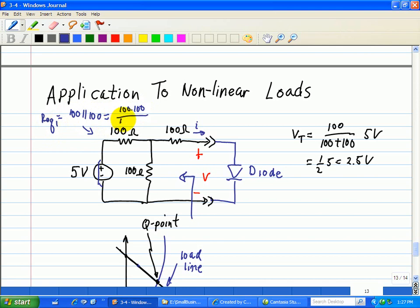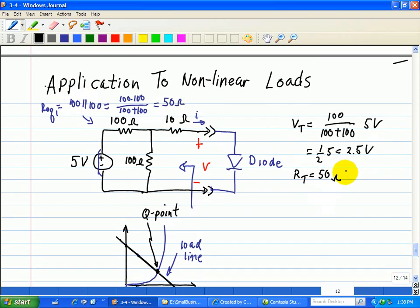is just 100 times 100, all over 100 plus 100. The product of those two resistors divided by the sum of those two resistors, and that's just 50 ohms. So therefore, RT is equal to this 50 ohm plus 10 ohms, or a total of 60 ohms.